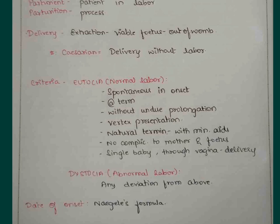Dystocia means abnormal labor. Any deviation from the above conditions will give rise to dystocia. The date of onset will be calculated using Naegele's formula, which is by adding seven days and nine months to the date of the last menstrual period.